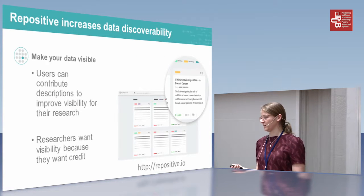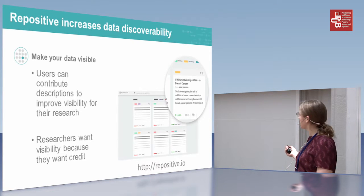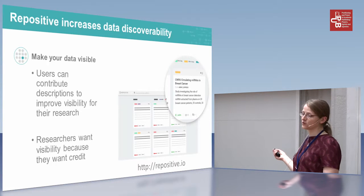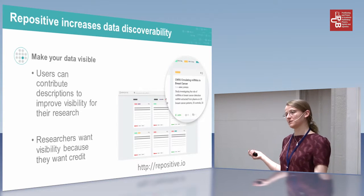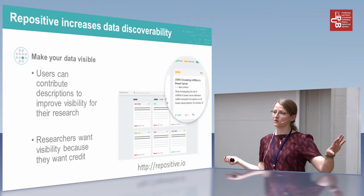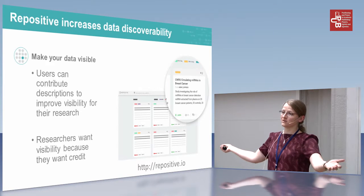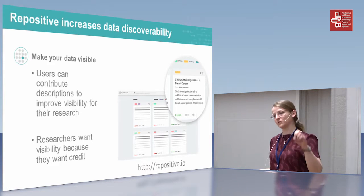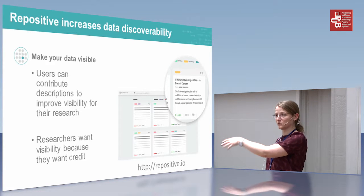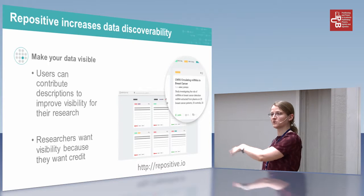It's two-way, because it's not only listing datasets from public repositories — we also make it possible for users to contribute their own descriptions and list their own data. For example, Manuel Corpus put his raw data in Figshare but nobody knew it was there. So he could put the raw data in Figshare and then make a listing on Repositive, so that when people come looking for data they also find his data and get the pointer to where it is — go ahead and download it, it's free.